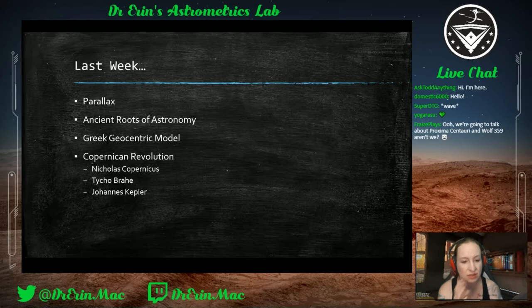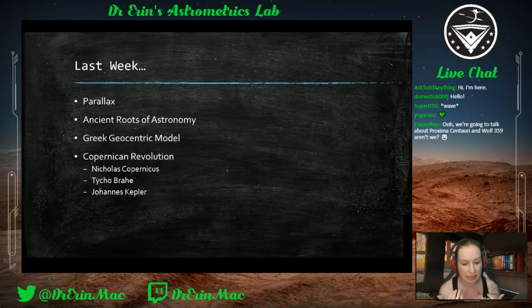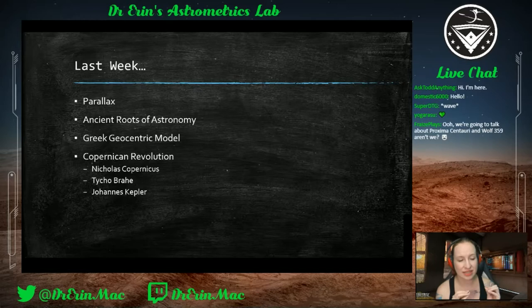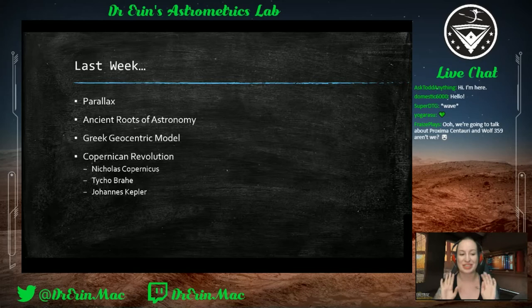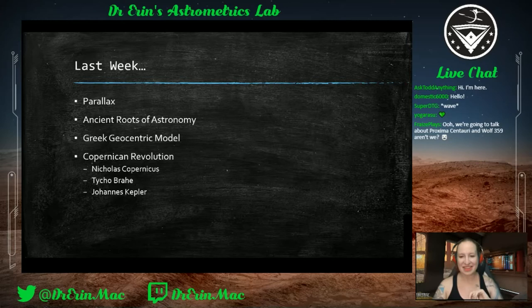The Ptolemaic model had a complicated method where the sun and all the planets went around the earth, and it lasted for hundreds of years. Then came the Copernican Revolution — Nicholas Copernicus revisited the heliocentric model putting the sun at the center, but his tables still weren't great. Tycho Brahe tried to take better and better data, not to refute Copernicus, just to improve the data so others could figure it out — which is exactly what Johannes Kepler did.